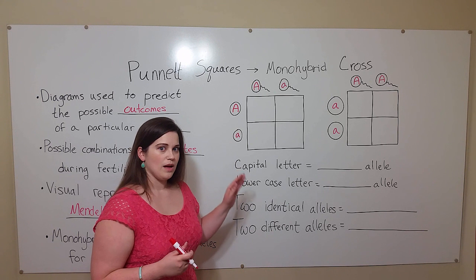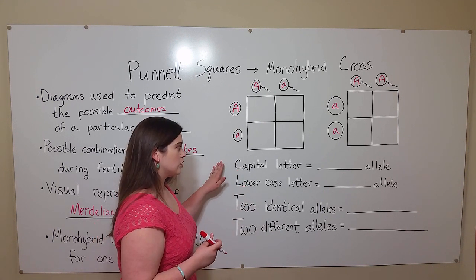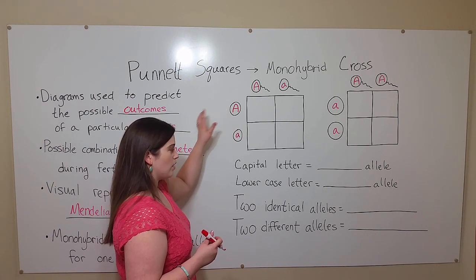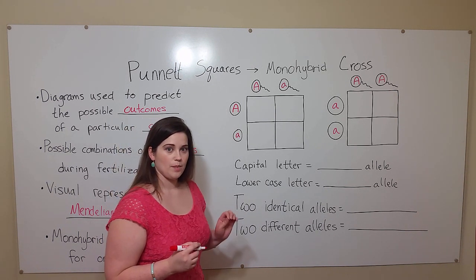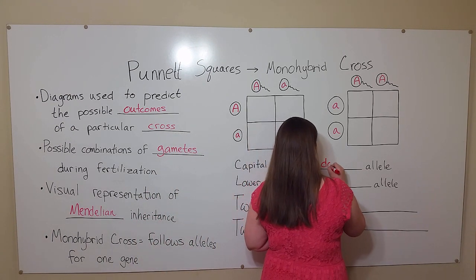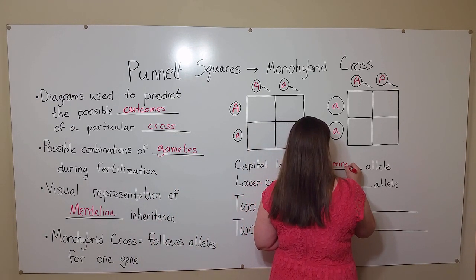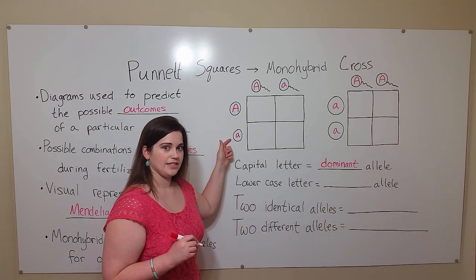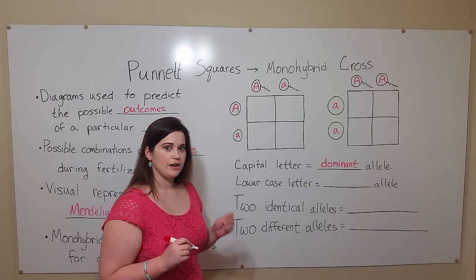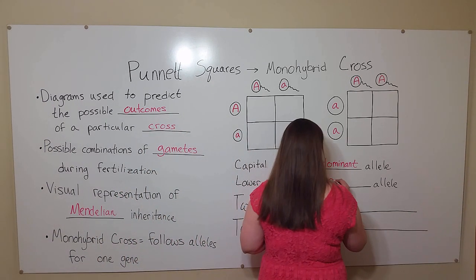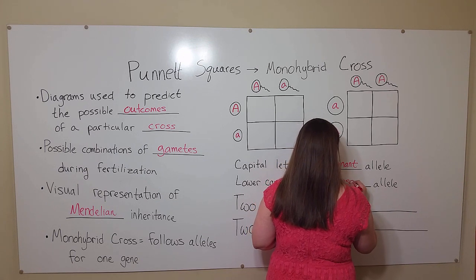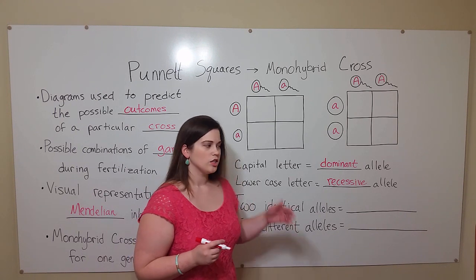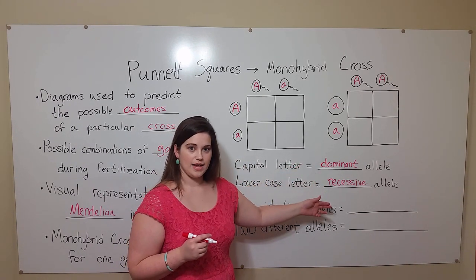First, you have to know about some notation. Whenever we see a capital letter, like the capital A, this represents a dominant allele. Whenever you see a lowercase letter, like the lowercase a, that represents a recessive allele. Dominant alleles mask recessive alleles.